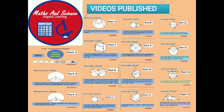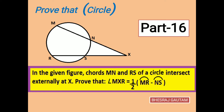Now in today's session we will be proving that angle MXR is equal to half of arc MR minus arc NS, if two chords MN and RS of a circle intersect externally at X, as shown in the figure.